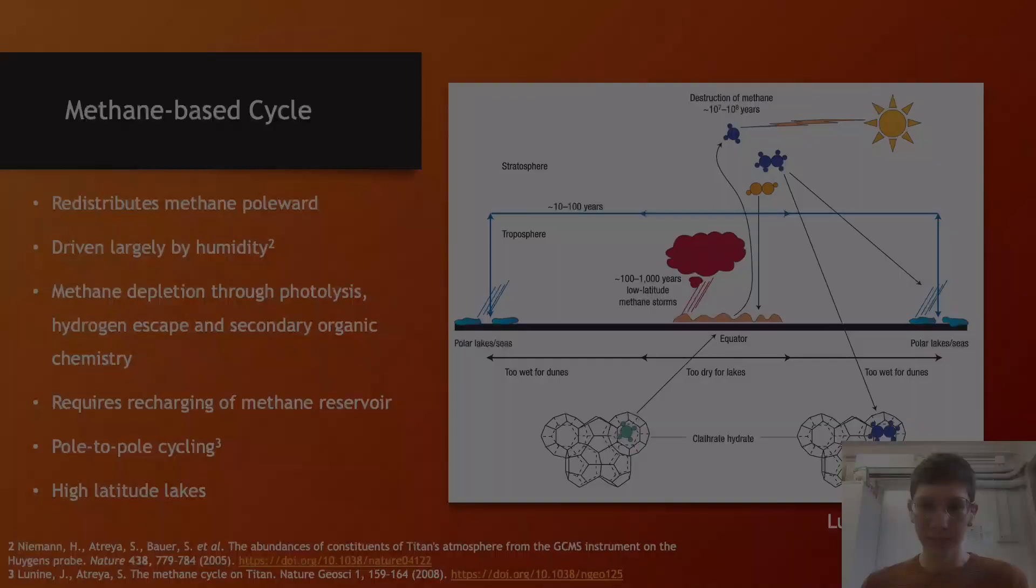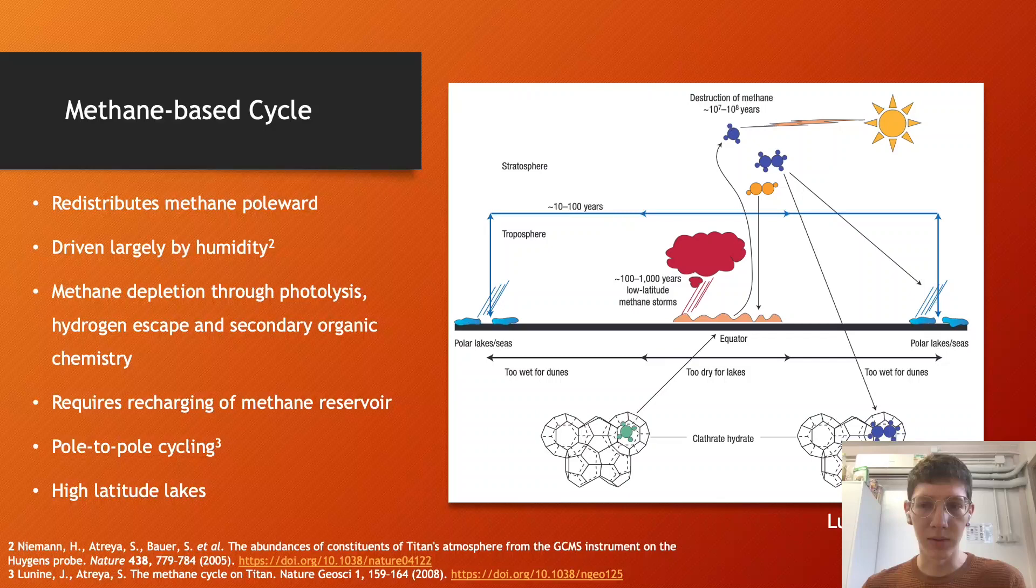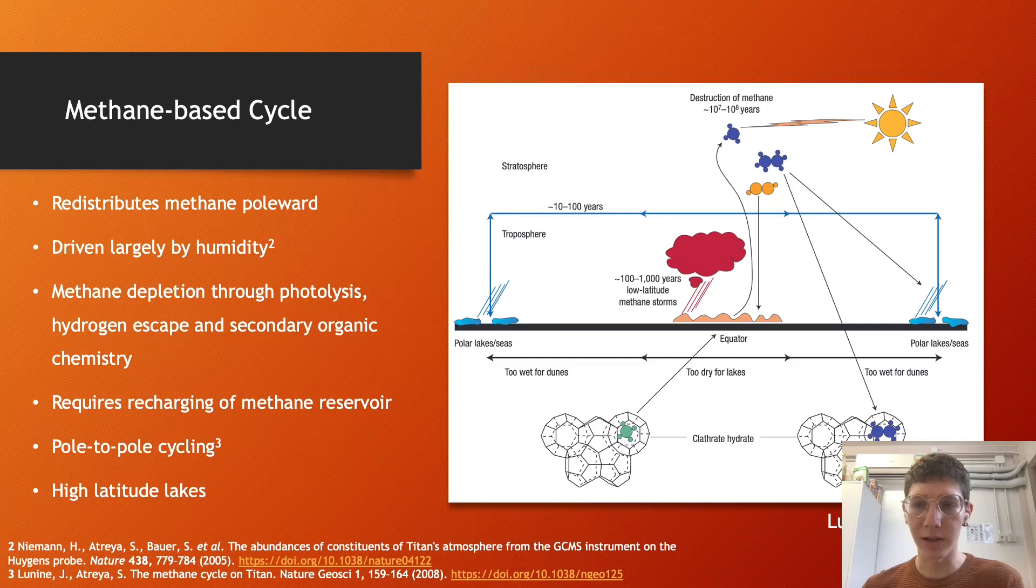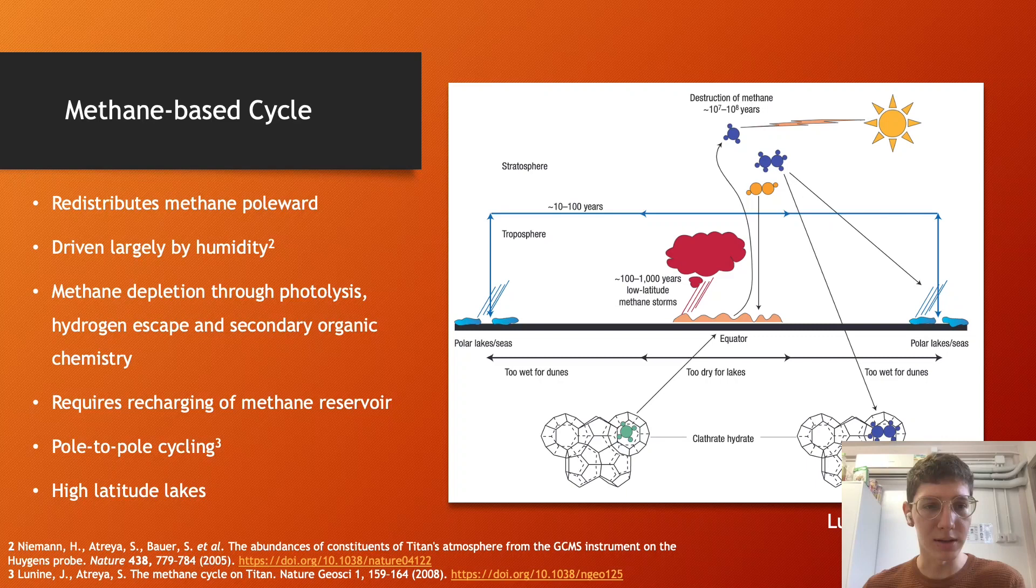Titan's atmospheric circulation acts to redistribute methane, drying low latitudes and delivering moisture to the poles. A fundamental driver of this methane cycle is the humidity of the troposphere, and so the Huygens Gas Chromatograph Mass Spectrometer demonstrated the relative humidity to be 100% from 40 kilometers down to 8 kilometers, with a constant mixing ratio below indicating a well-mixed and subsaturated lower troposphere.